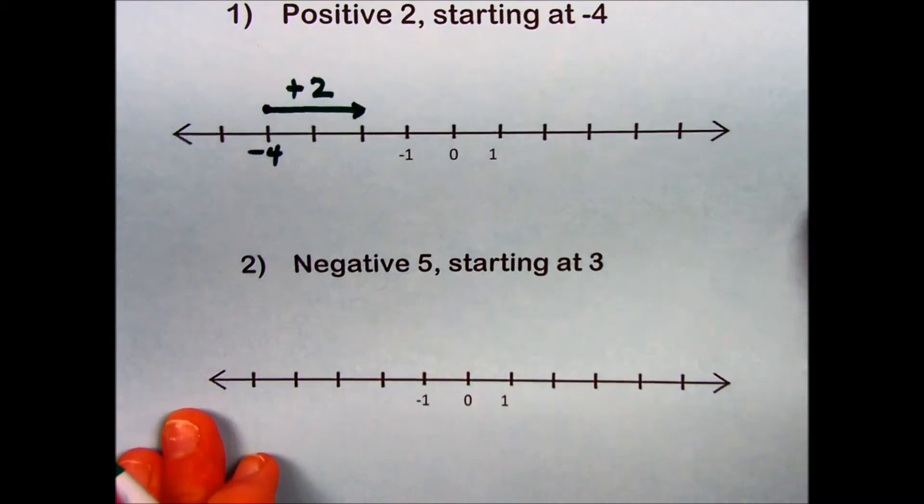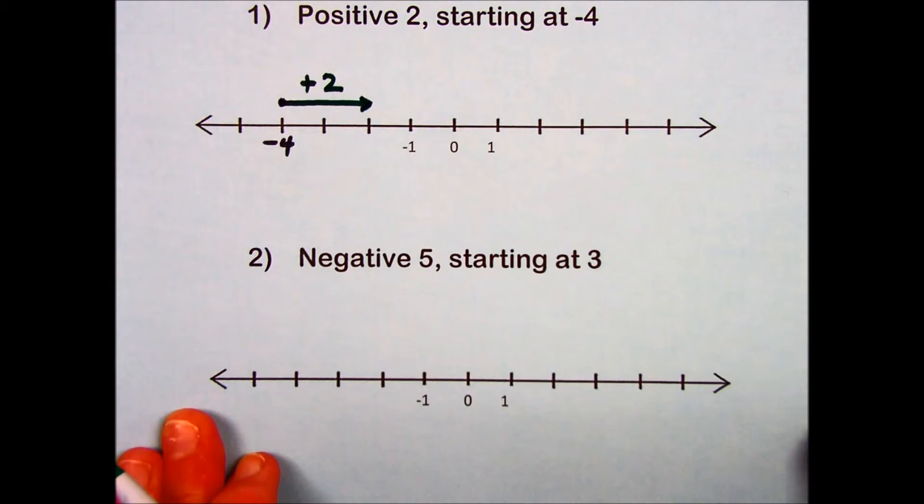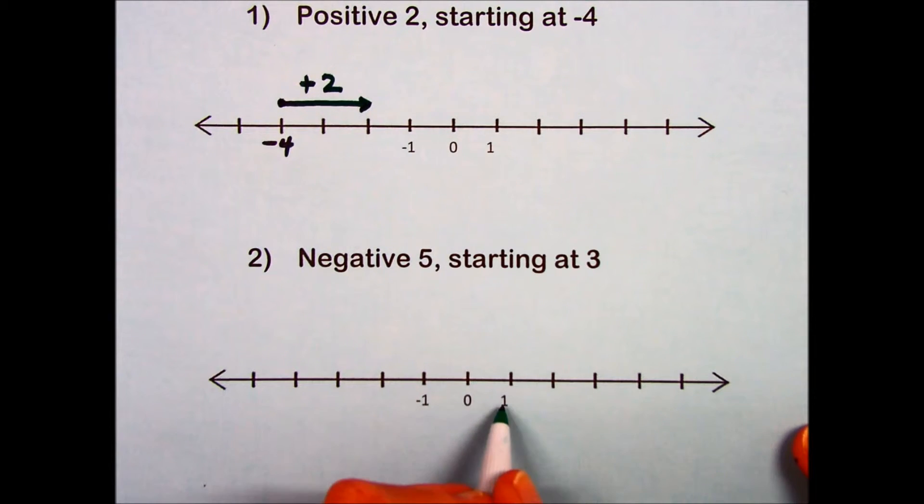Problem number 2 asks us to indicate a number line with a negative 5 starting at the point 3. Again, a scale is here, 1, 2, 3 is my starting place.